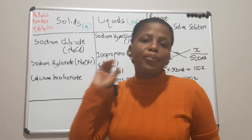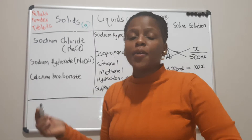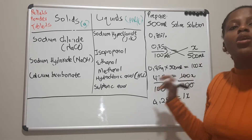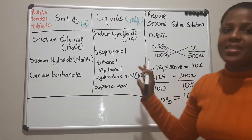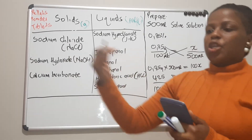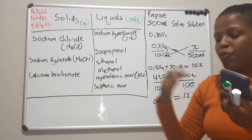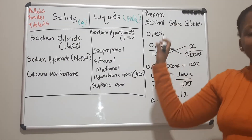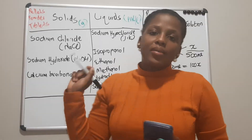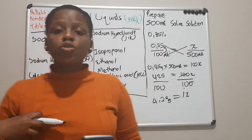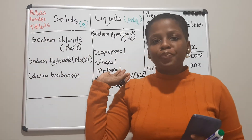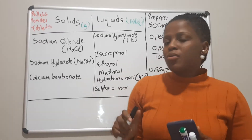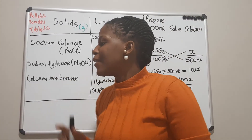That is how you do the weight over volume — it's as simple as that. Please make sure you do not forget to write the final statement at the end. If you leave it at just the calculation, you will lose marks, because the calculation is only an aid to getting to the answer. The final statement is what actually answers the question. Now I'm going to quickly do volume over volume.